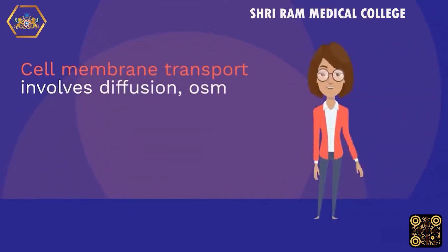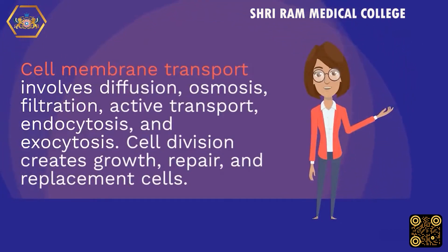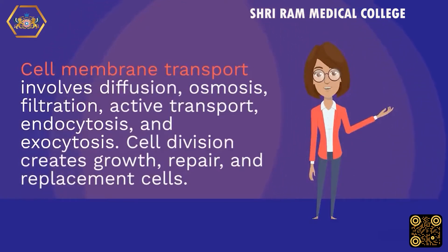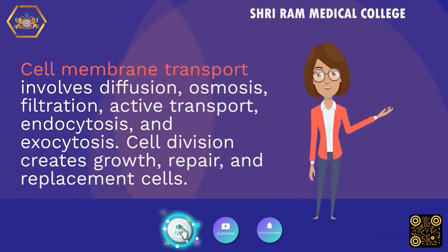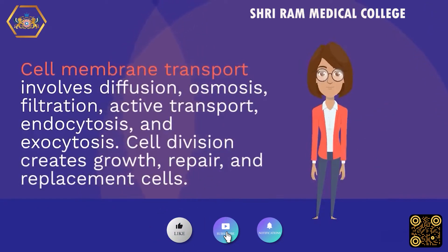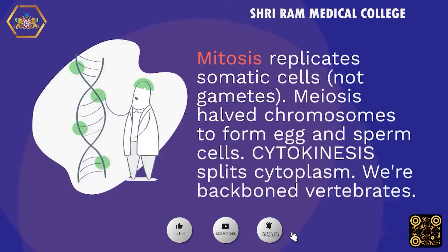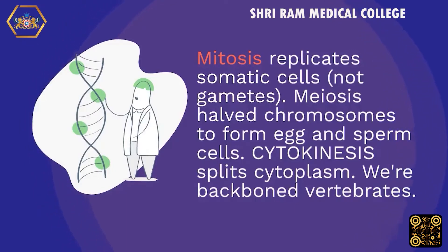Cell membrane transport involves diffusion, osmosis, filtration, active transport, endocytosis, and exocytosis. Cell division creates growth, repair, and replacement cells. Mitosis replicates somatic cells, not gametes. Meiosis halves chromosomes to form egg and sperm cells. Cytokinesis splits the cytoplasm.